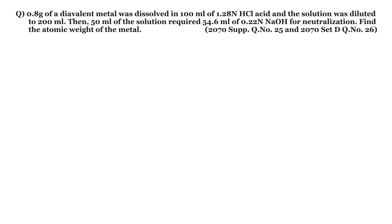0.8 gram of a divalent metal was dissolved in 100 ml of 1.28 N hydrochloric acid and the solution was diluted to 200 ml. Then 50 ml of the solution required 54.6 ml of 0.22 N sodium hydroxide for neutralization. Find the atomic weight of the metal.